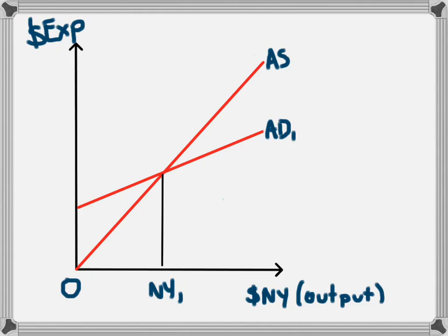The first way is that the slope of the aggregate demand line could change. For every extra dollar of income, households will spend some of that money and save some of it. The amount that they spend determines the slope of the line. If they spend more of each dollar, the slope of the line will increase, and we can see this happening here.